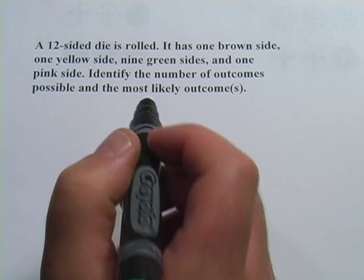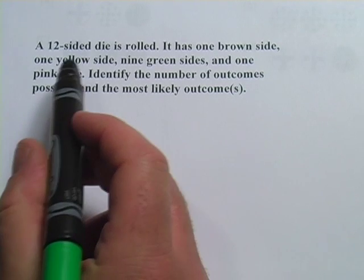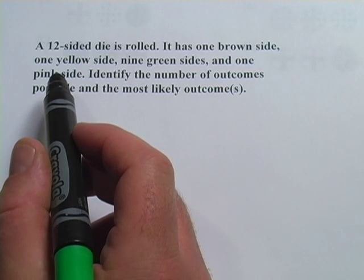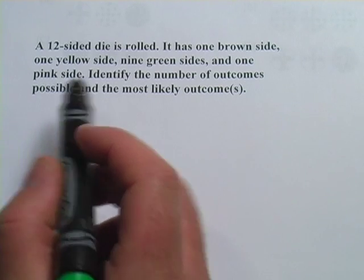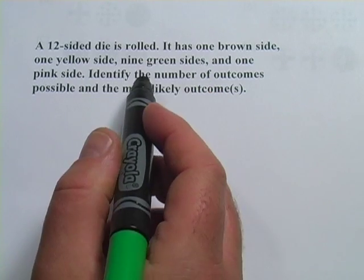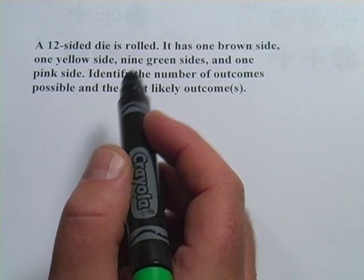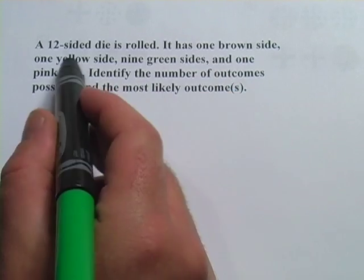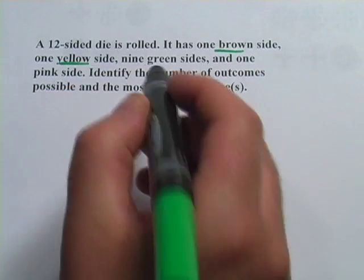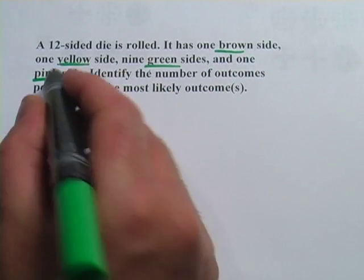So what you might be tempted to do here is to say that because this is a 12-sided die, there are 12 possible outcomes. But there are only a certain number of colors on here, and it's really the color that's the outcome. So there's one brown, one yellow, nine green, and one pink side.